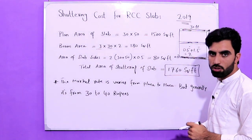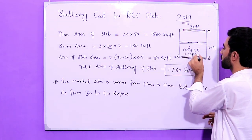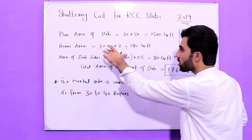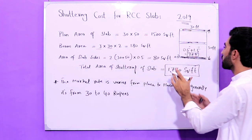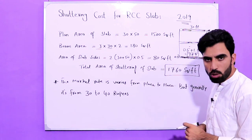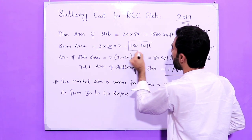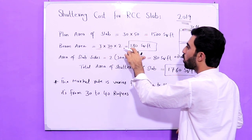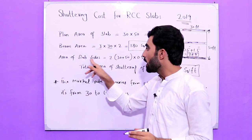So 0.5 feet plus 1.5 feet equals 2 feet. How do we find shuttering for the beams? Three beams, each 30 feet long, multiplied by 2 — because the shuttering depth of the beam is 1.5 feet and its width is 0.5 feet, totalling 2 feet. So the area of three beams is 3 × 30 × 2 = 180 square feet for beams.